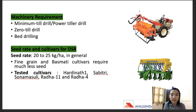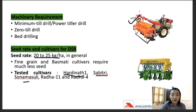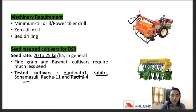For seed rates and cultivars in DSR, the seed weight is usually about 20 to 25 kilograms per hectare. For fine-grain basmati cultivars, much less seed is required. Some of the tested cultivars suitable for the direct seeding method are Hardinath, Sabitri, Sunama Suli, Radha Laven, and Rata 4. The cultivars suitable for DSR are very important to remember.